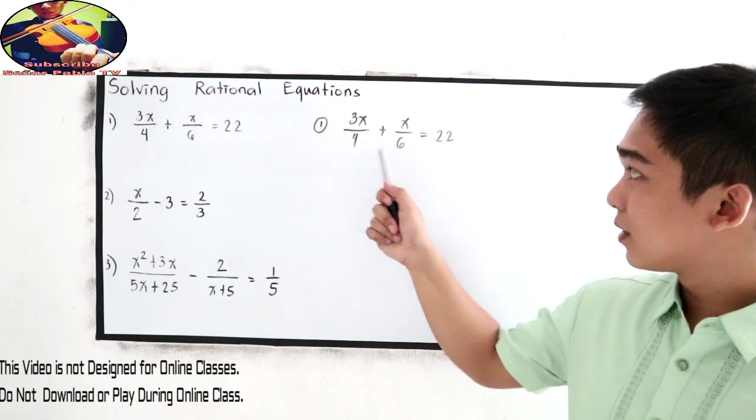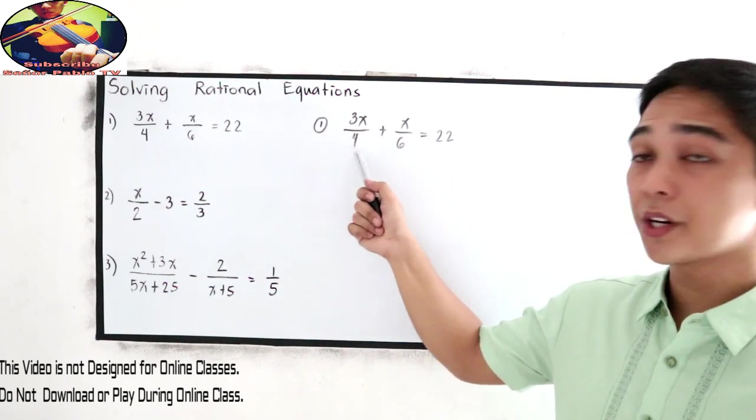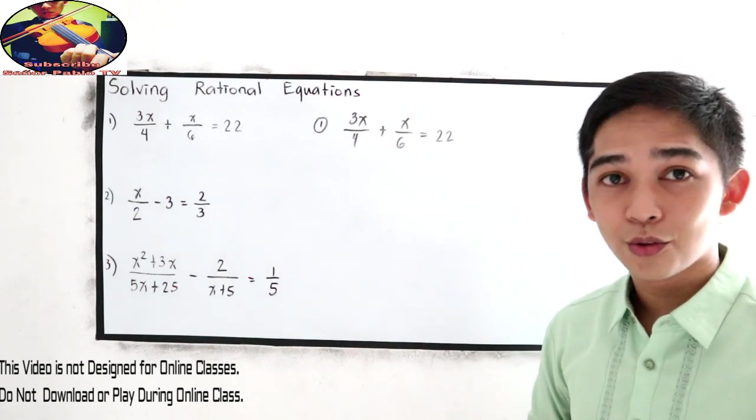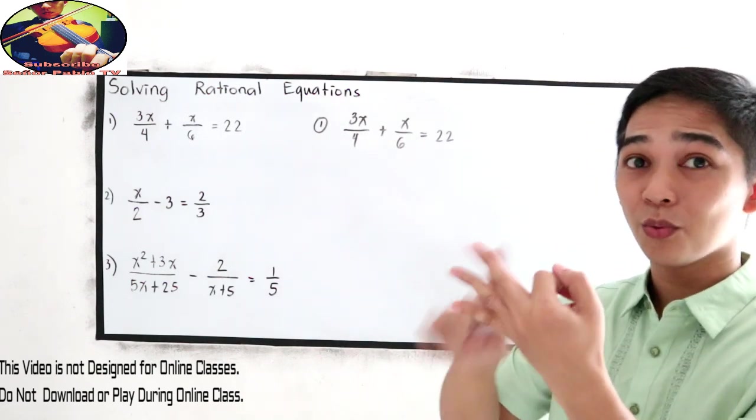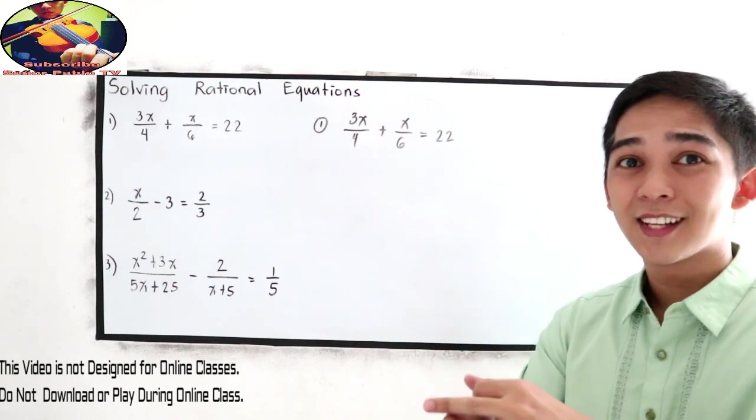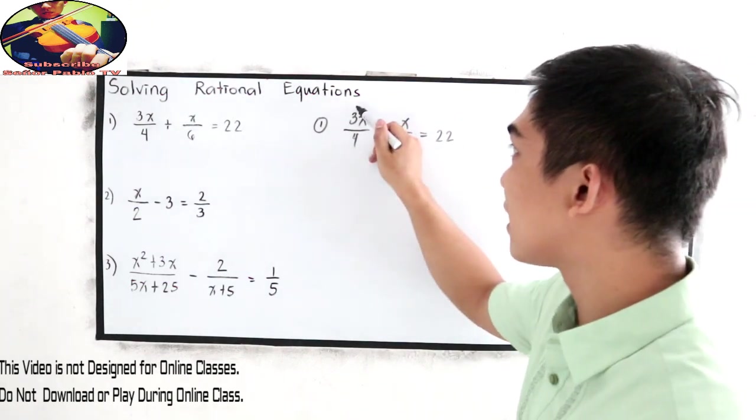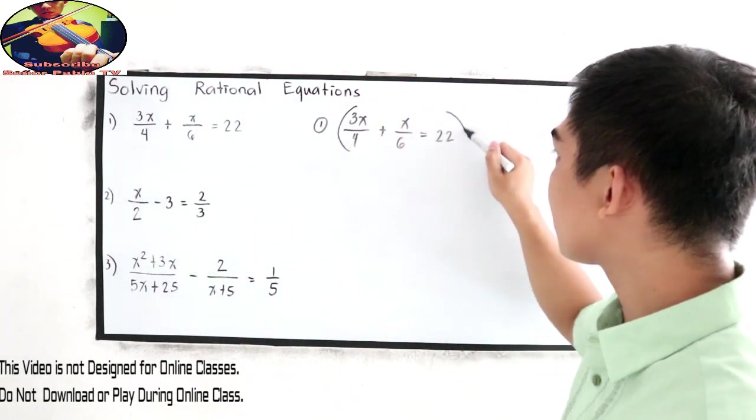For numbers 6 and 4, their LCD is 12. So 4, 8, 12, then 6, 12. That's their least multiple.